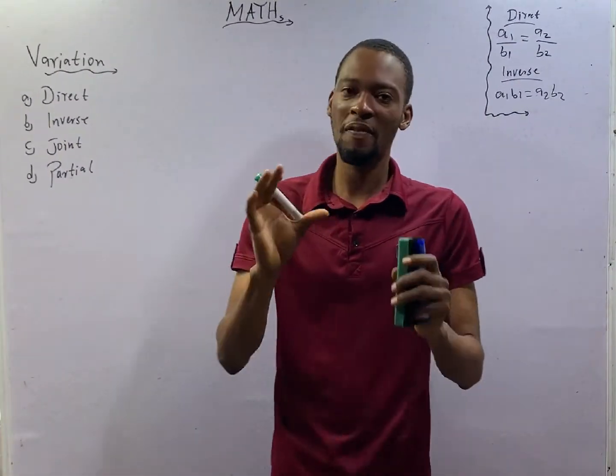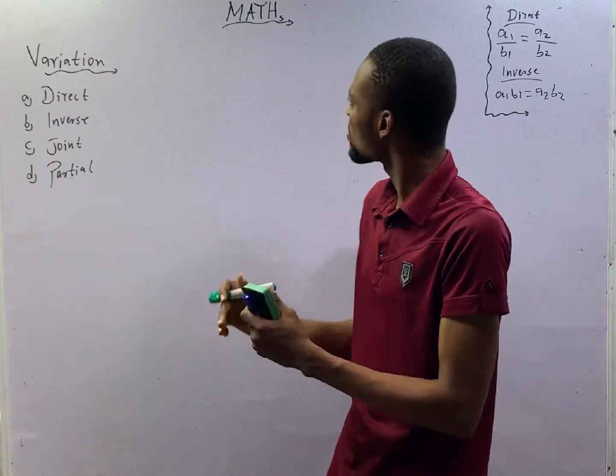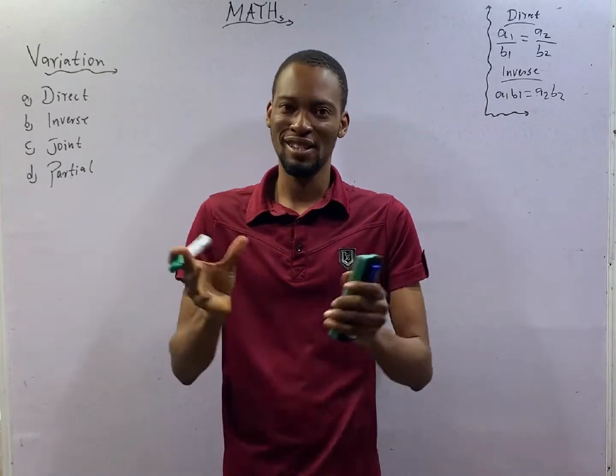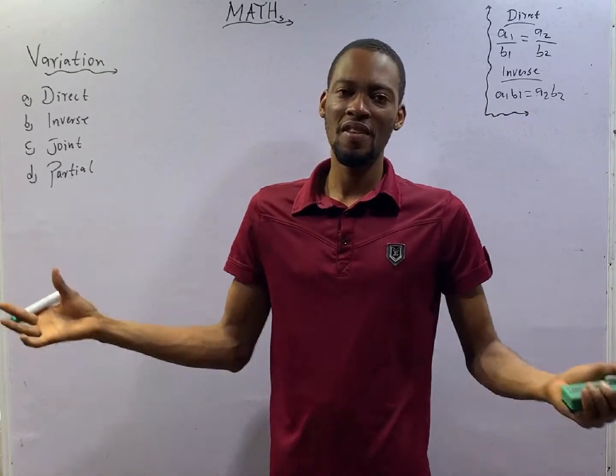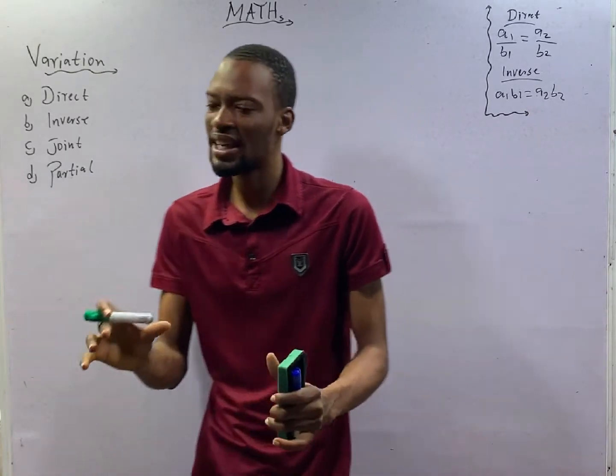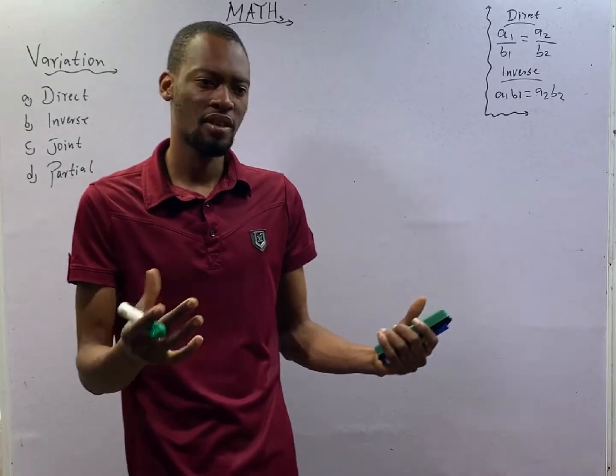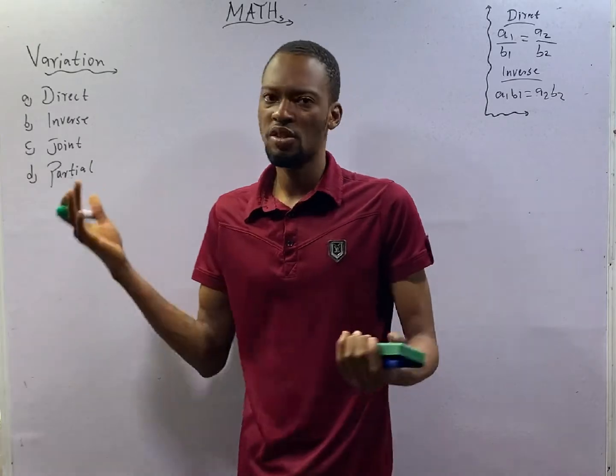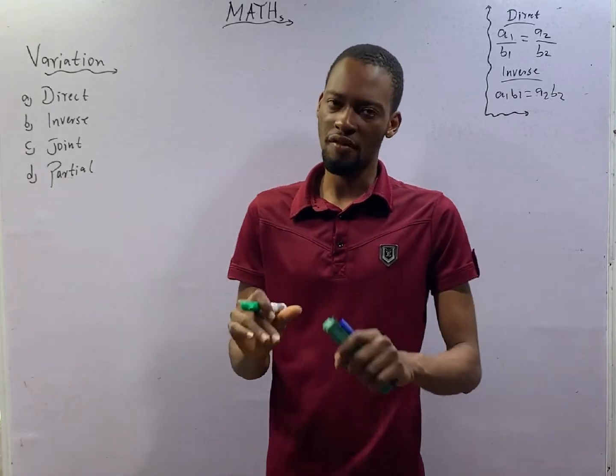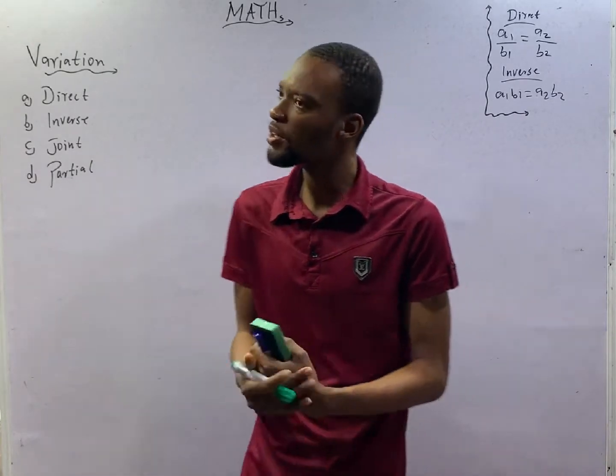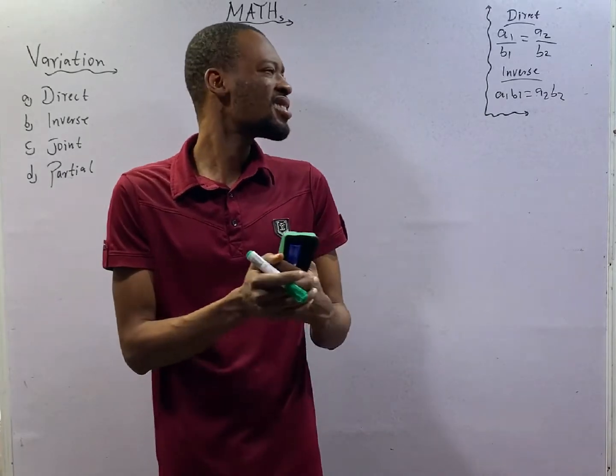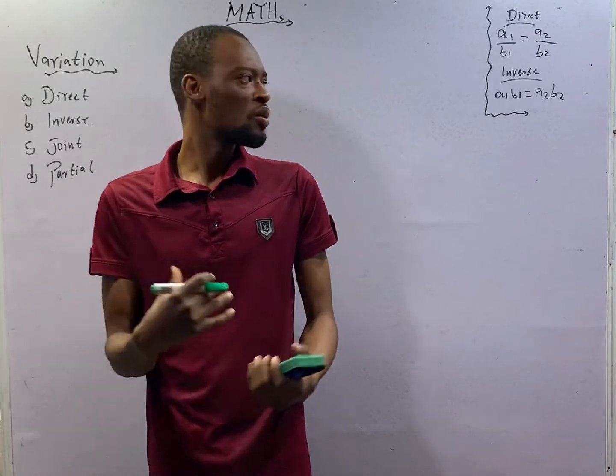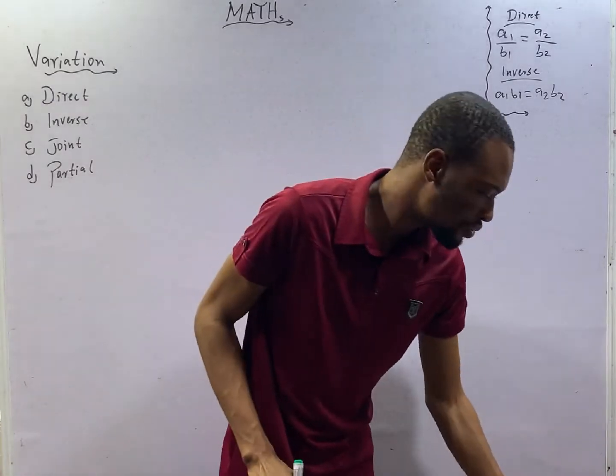This is episode number 37 of the 120 Days to JAM with Maths with Flash Isaac. In the previous episode, we started variation and we introduced direct, inverse, joint and partial variation. In this episode, episode 38 and episode 39, we shall be answering questions under variation.